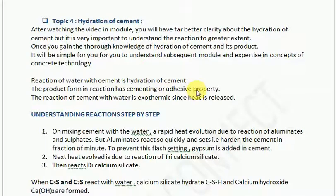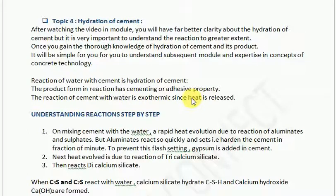When water is added to cement, certain chemical reactions take place. We should try to question what these chemical reactions are and in what steps they happen. The reaction of cement with water is exothermic — that is, heat is released during the process.